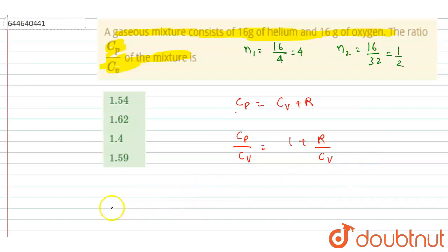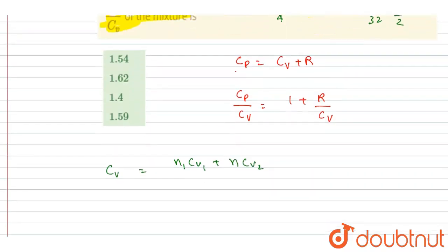So if I write down the Cv mixture, it will be equal to n1 Cv1 plus n2 Cv2 divided by n1 plus n2.